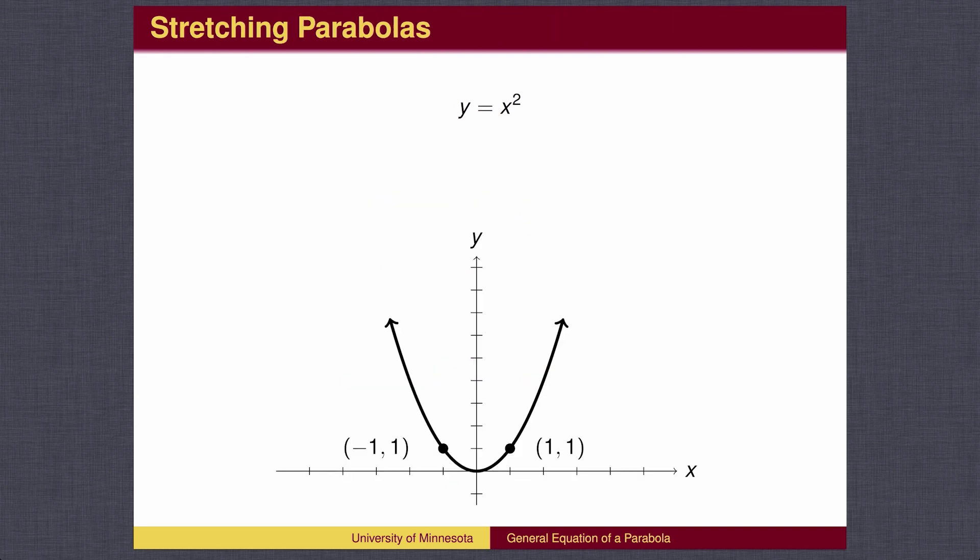We can stretch the parabola in two different ways. The first is similar to amplitude for sine waves. Multiplying a number outside the parentheses after the function of squaring is applied will make the graph taller. y equals 4x squared makes the y-coordinates 4 times as large.